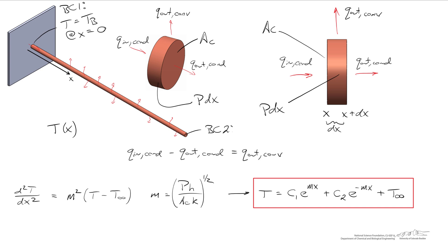Another common boundary condition is that the flux at the end of the rod is zero: negative k dT/dx equals zero at x equals L, which corresponds to an insulated tip — the first derivative of temperature equals zero at x equals L. With two boundary conditions applied, we can solve for the temperature profile as a function of x, and different boundary conditions will yield different temperature profiles.